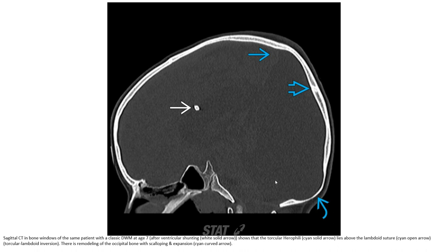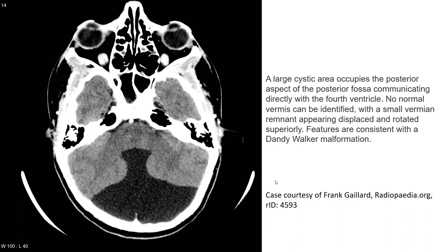Sagittal CT bone window of the same patient with classic Dandy-Walker malformation at seven years old, showing that the torcular-lambdoid junction lies above the lambdoid suture. There is remodeling of the occipital bone with scalloping and expansion. The large cystic area occupying the posterior fossa communicates with the fourth ventricle, and no normal vermis can be identified.